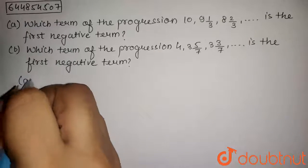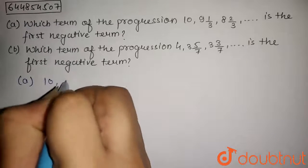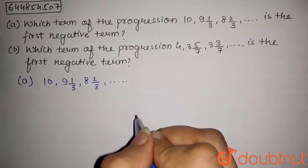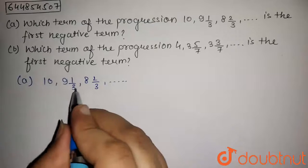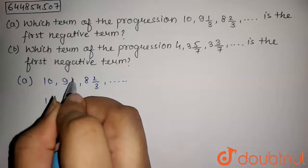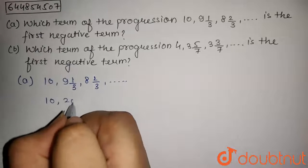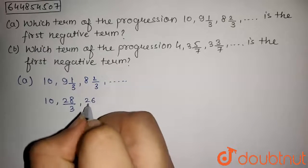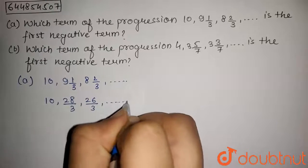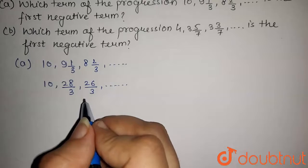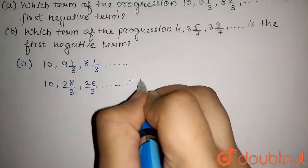In this question, we have given the series 10, 9⅓, 8⅔ and so on. The terms are in mixed fractions, so in simple fraction form this will be 10, 28/3, 26/3 and so on. As the difference between two consecutive terms is the same, we can say that this belongs to an arithmetic progression.